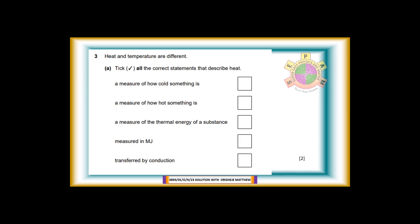Heat and temperature are different. Tick all the correct statements that describe heat. 1. A measure of how cold something is - describes temperature. 2. A measure of how hot something is - also describes temperature. 3. A measure of the thermal energy of a substance - Tick, describes heat. 4. Measured in MJ - Tick, describes heat. 5. Transferred by conduction - Tick, describes heat. For 2 marks.